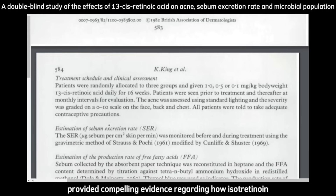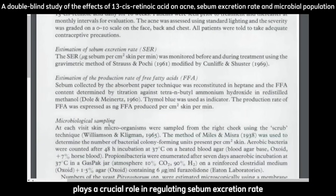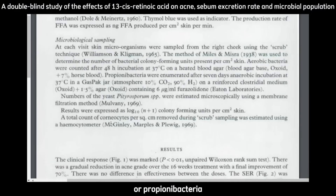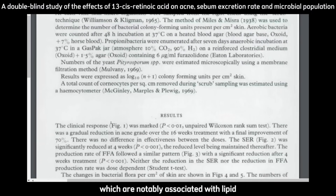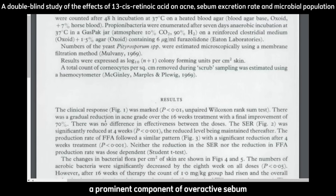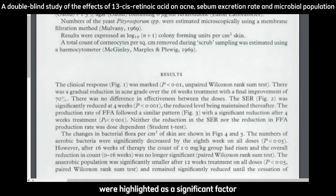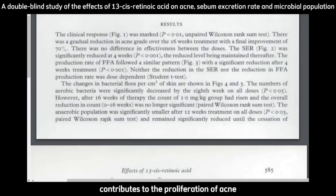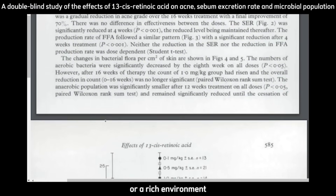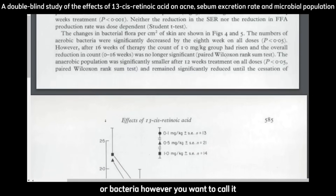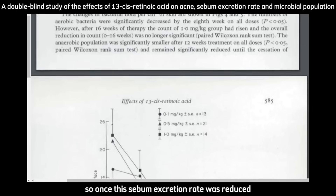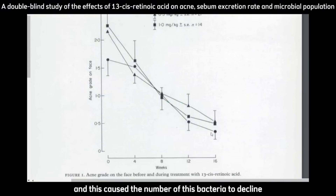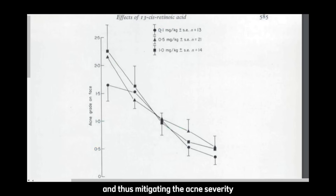King et al. provided compelling evidence regarding how isotretinoin plays a crucial role in regulating sebum excretion rate and subsequently the microbial populations — particularly propionibacteria, which are notably associated with lipid-rich areas of the skin. Triglycerides, a prominent component of overactive sebum that causes acne, were highlighted as a significant factor in the growth of these microorganisms, suggesting that sebum rich in triglycerides contributes to the proliferation of acne by providing a rich environment for propionibacteria. Once the sebum excretion rate was reduced, it reduced the availability of triglycerides, causing the bacterial numbers to decline and ultimately die, thus mitigating acne severity.